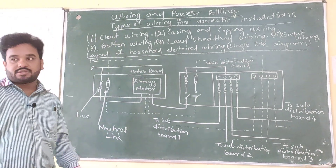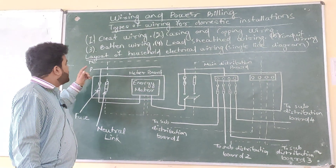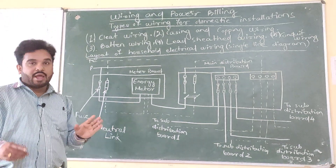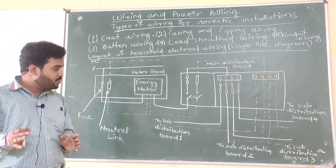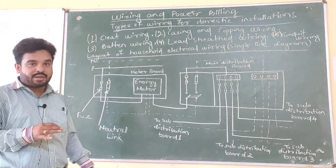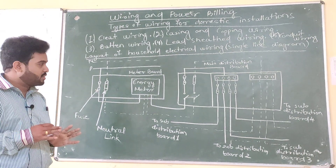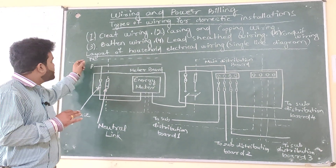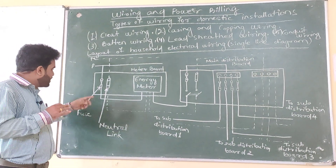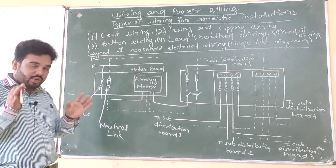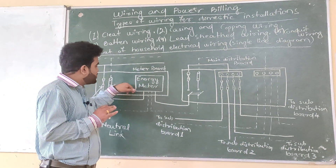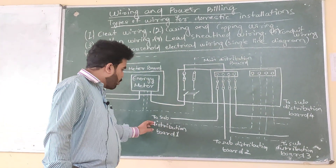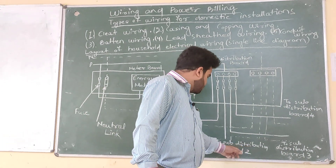Next we will see the layout of household electrical wiring — the single line diagram — which is also very very important. I will make a practical on this. You just remember and practice this circuit diagram, which is very important for your semester examination. This is your energy meter, this is your positive terminal, and this is your neutral terminal — the neutral link shown here. Then this is your fuse. This is your meter board, then your main distribution board, then distribution board number one and distribution board number two.